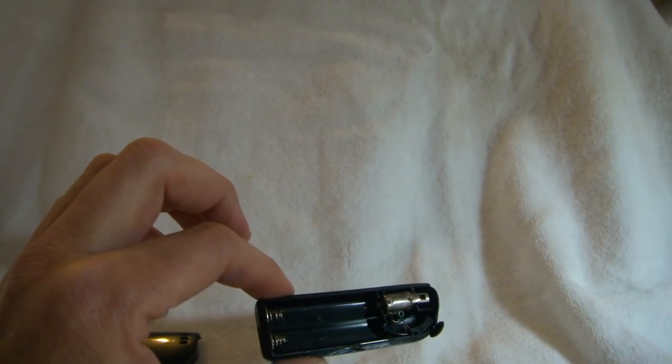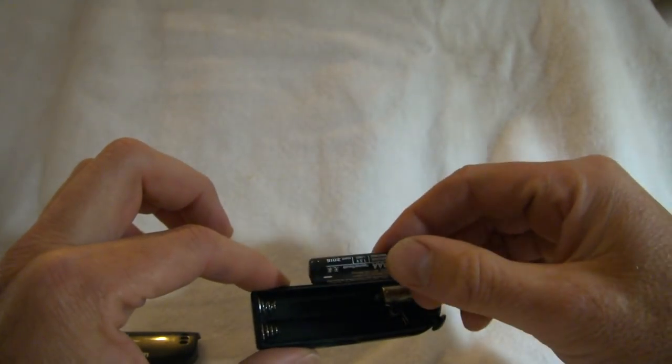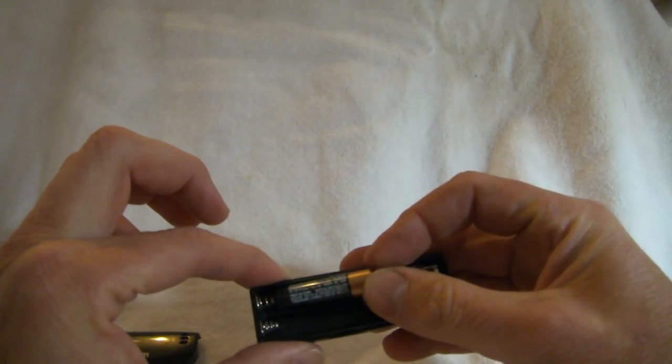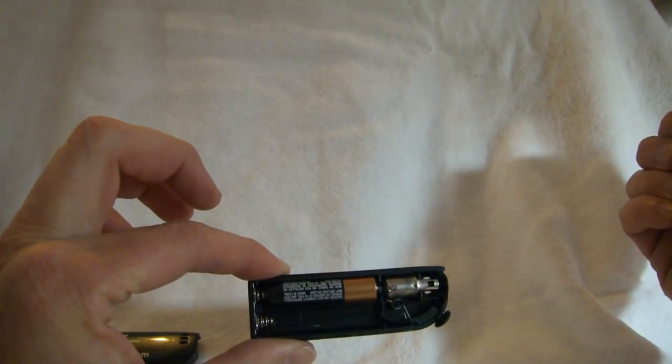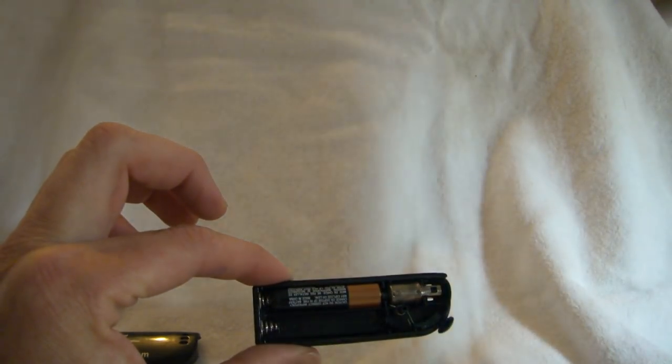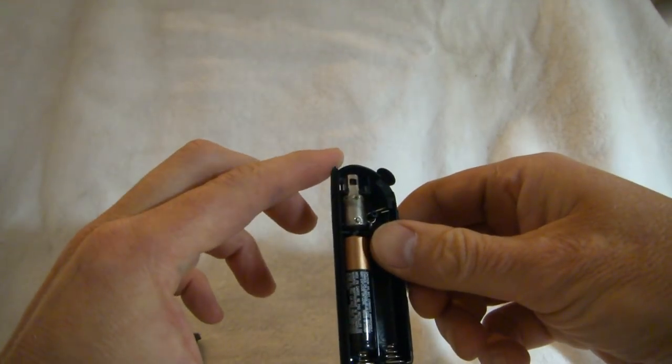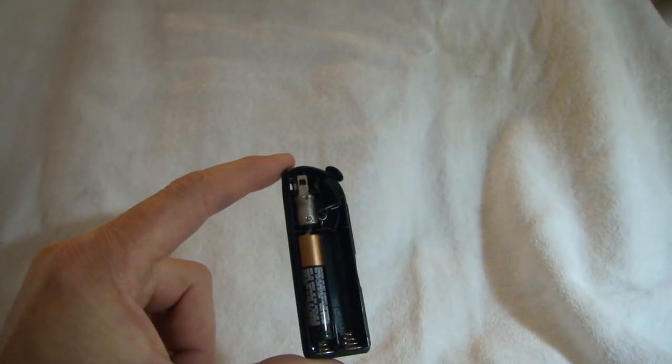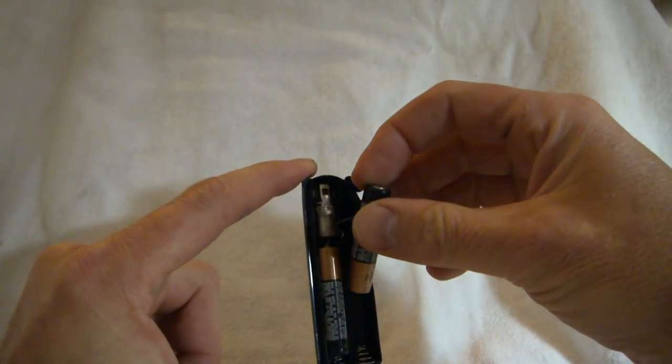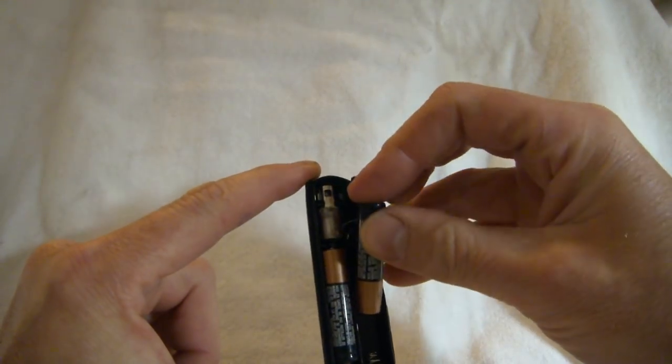So, following the directions, we're going to take a battery. We're using Duracell here, but any alkaline battery will be fine. Pop it in. On the left side here, we're putting the negative against the spring. And on the right hand side, we're putting the positive against the spring.